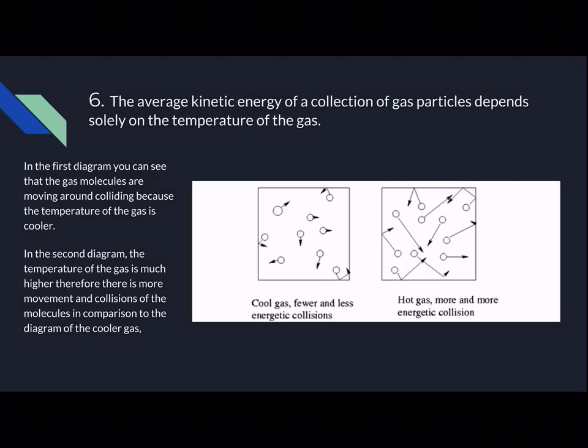Number six: the average kinetic energy of a collection of gas particles depends solely on the temperature of the gas. As seen in the first diagram, the gas molecules are moving around and colliding because the temperature is cool, but they're not moving very rapidly. In the second diagram, because the temperature of the container is much higher, the molecules are moving around much faster, colliding and creating more kinetic energy.